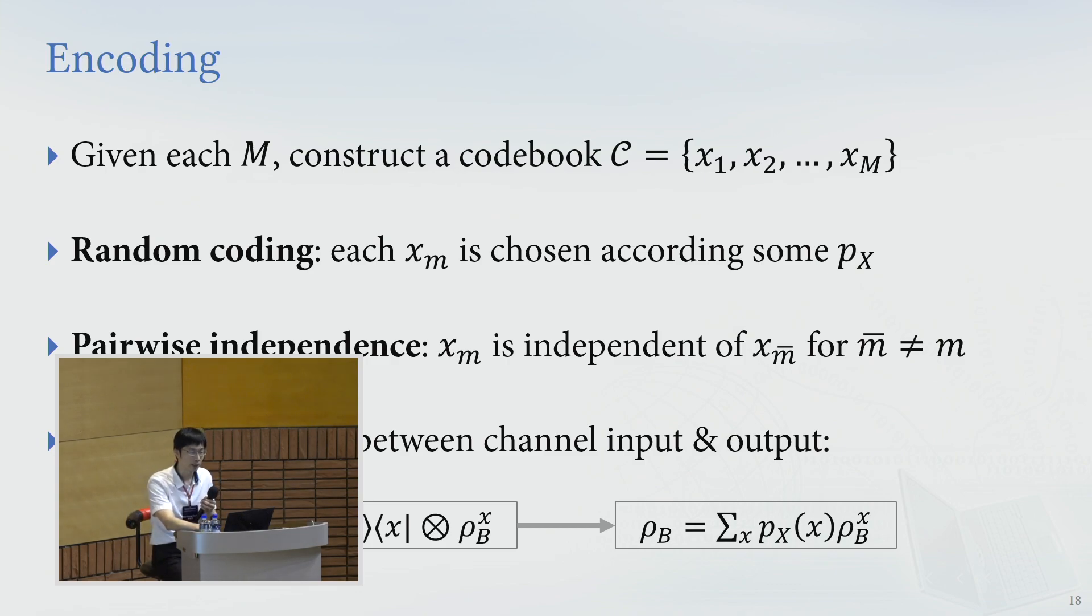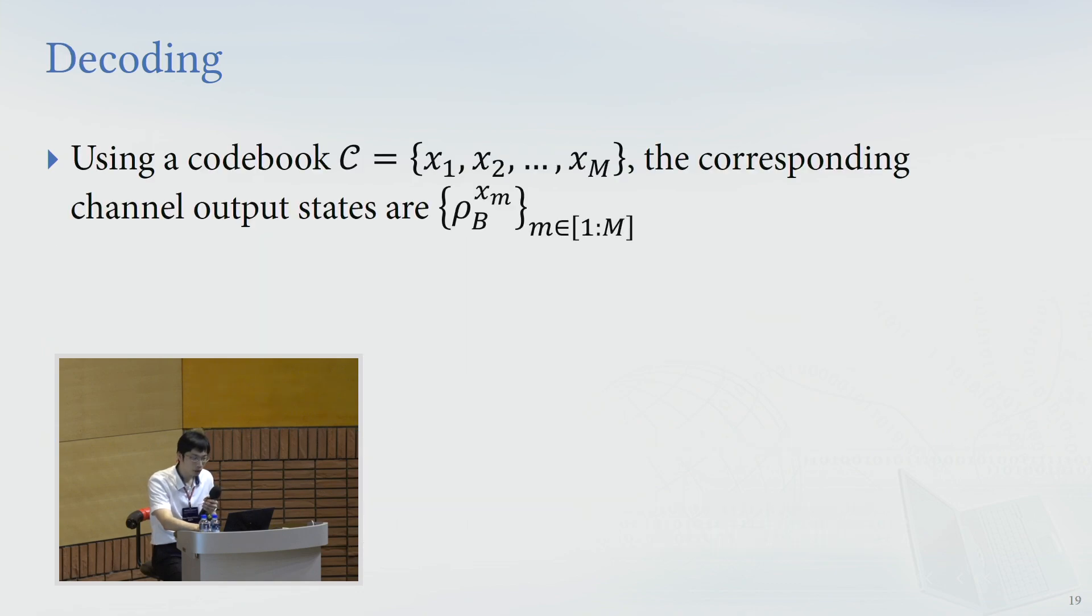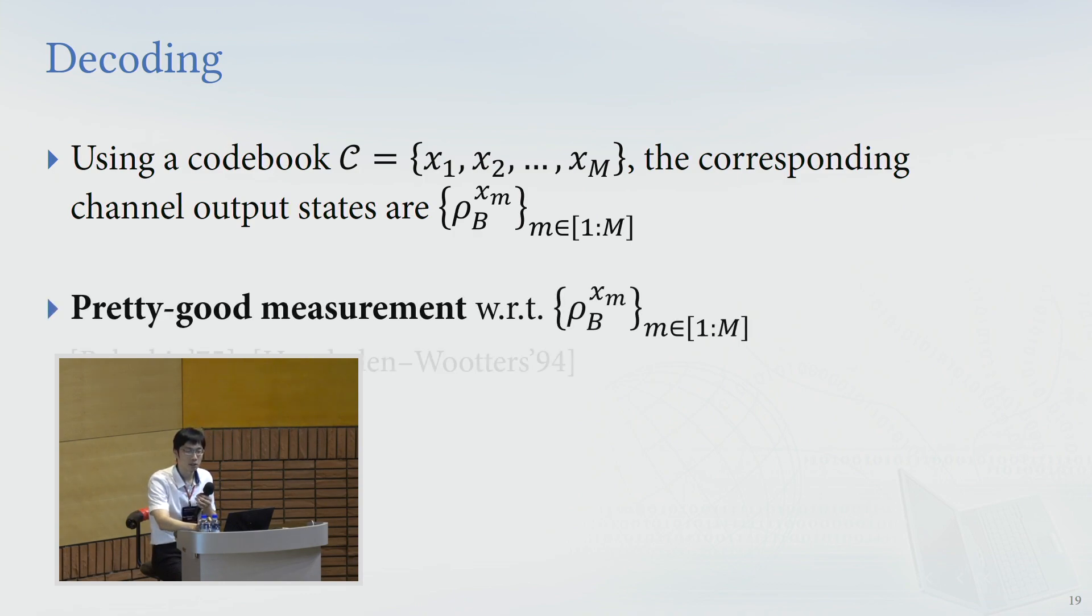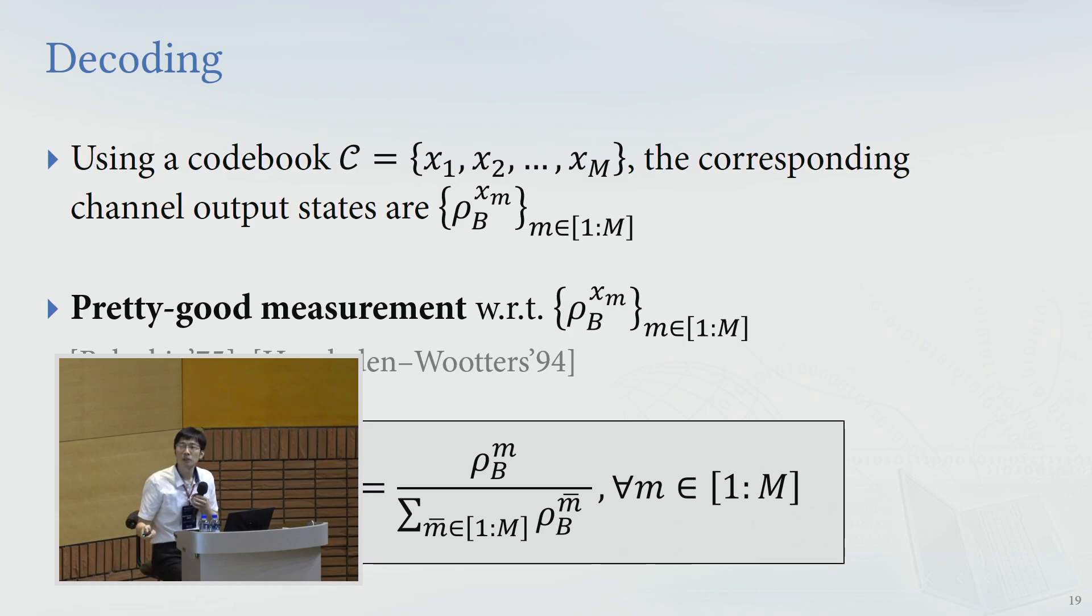So for the decoding, we'll use some conformation. So given a realization of the code book, x1 to the capital xM, the corresponding channel output is this. Then we use the pretty good measurement with respect to those channel output states. So that's important.